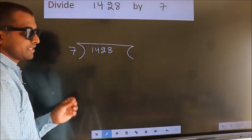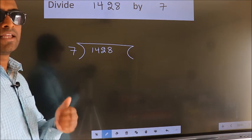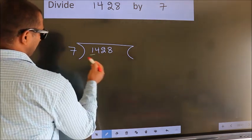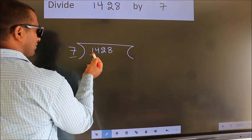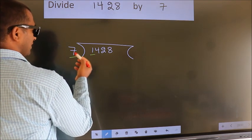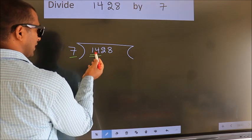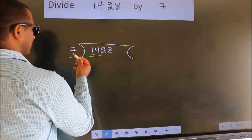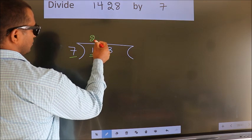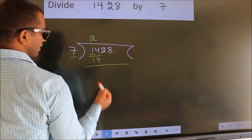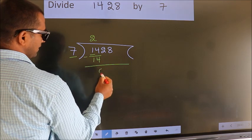This is step 1. Next, here we have 1, here 7. 1 is smaller than 7, so we should take 2 numbers: 14. When do we get 14? In the 7 table. 7 times 2 is 14. Now we subtract and get 0.